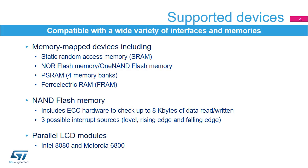The FSMC controller supports a wide variety of devices and memories. It interfaces with static memory mapped devices including SRAM, NOR or NAND Flash memory, PSRAM, and FRAM. The FSMC also interfaces with NAND Flash memories and supports error code correction, or ECC, for up to 8 kilobytes of data read or written. Three interrupt sources can be configured to generate an interrupt when a rising edge, falling edge, or high level is detected on the NAND Flash Ready/Busy signal.